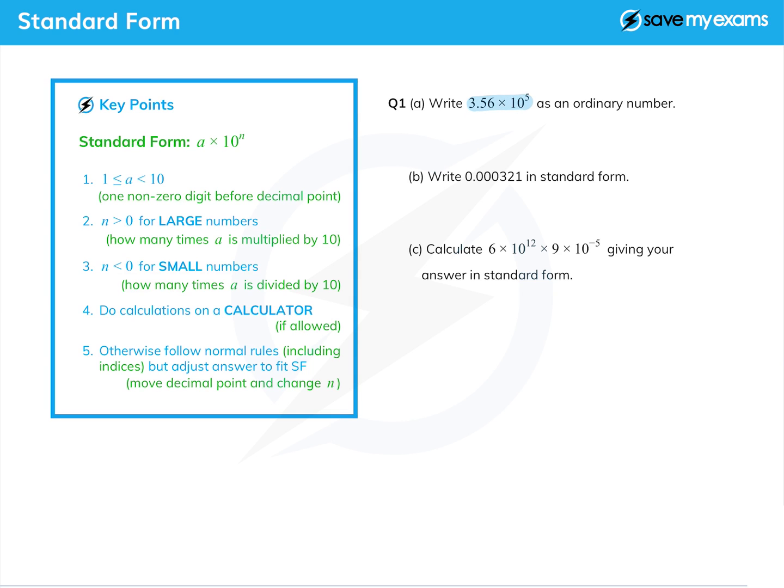A couple of straightforward parts to this question to start with. Write 3.56 times 10 to the 5 as an ordinary number. Before we do that, let's just look at this. This really is in standard form. The 'a', the first bit, is a number between 1 and 10. There is one non-zero number before the decimal point.